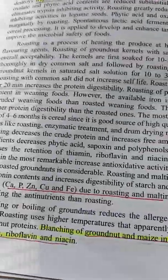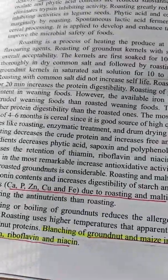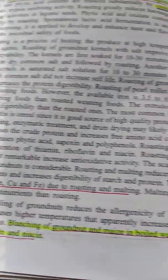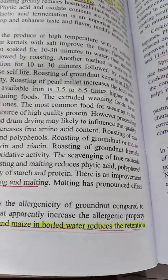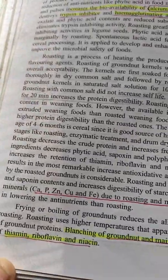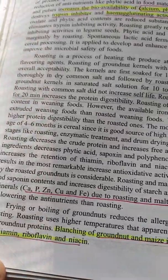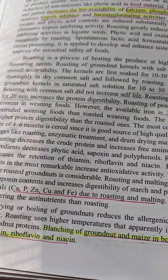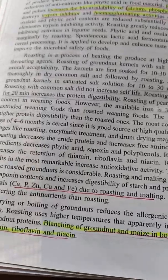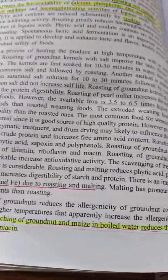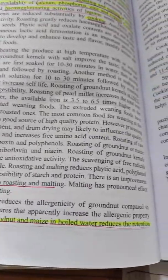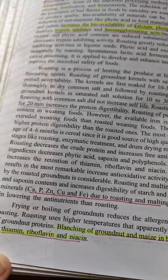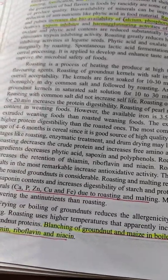One important line to remember: blanching of groundnut and maize in boiled water reduces the retention of thiamine, riboflavin, and niacin. Please remember it — blanching of groundnut and maize in boiled water reduces the retention of thiamine, riboflavin, and niacin.